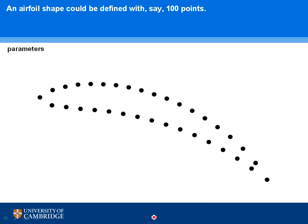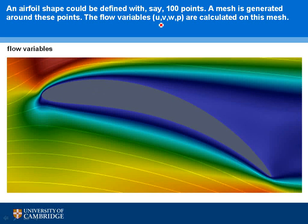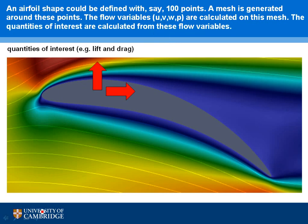Going back to our airfoil shape, imagine it defined by around a hundred points — only 40 are shown here, but you get the idea. In a computational fluid dynamics package, we would mesh around those points and then calculate the flow variables on that mesh. In an incompressible flow, the flow variables are U, V, and W — the velocity components in three directions — and the pressure. Forces in the horizontal and vertical directions around the airfoil give drag and lift respectively.